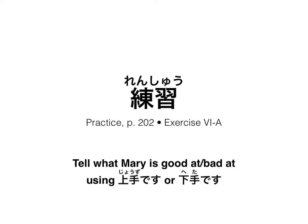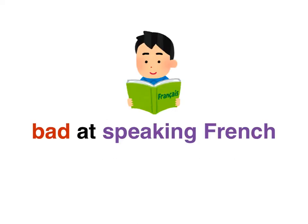As always, I'll give you the prompt in English and ask you to pause the video while you think of how you would create that sentence in Japanese, then unpause when you'd like to confirm if your answer is correct. Here we go. How would we say: Mary is bad at speaking French? Recall that 'speaking French' is the action — put the particle no afterwards, then ga, and add 'bad at.' Give it a shot; pause the video here.